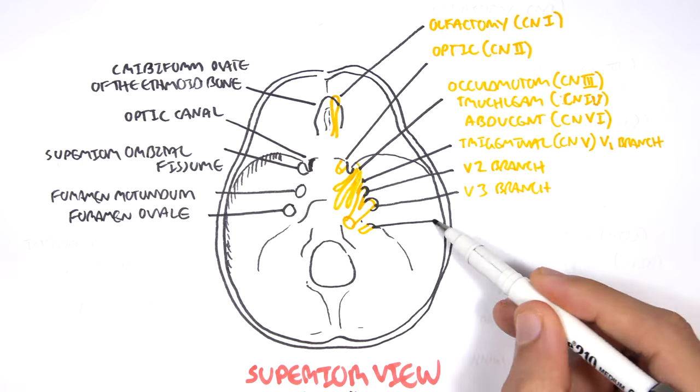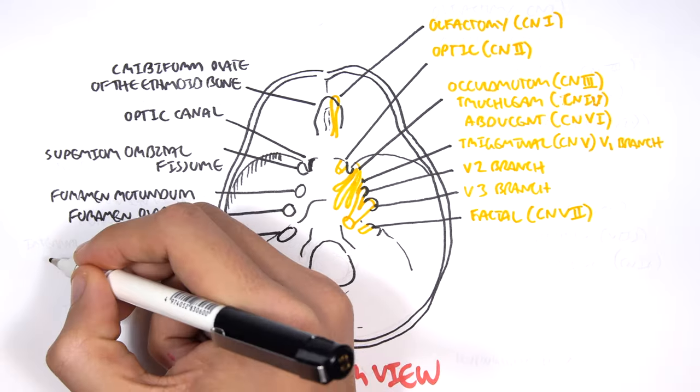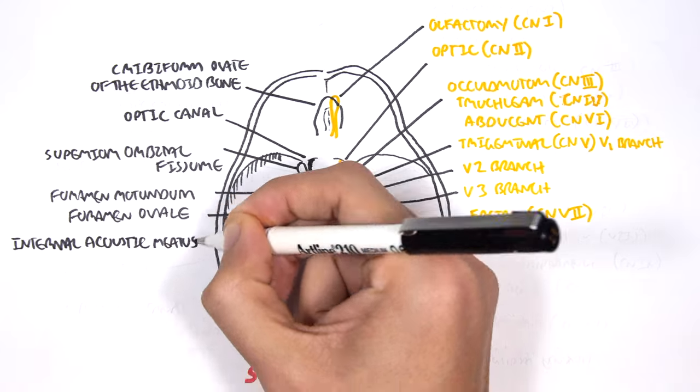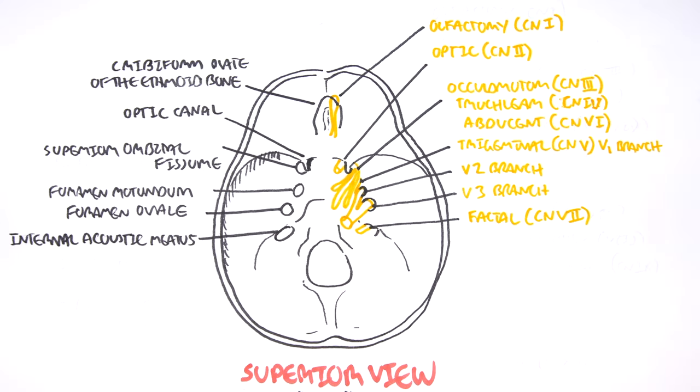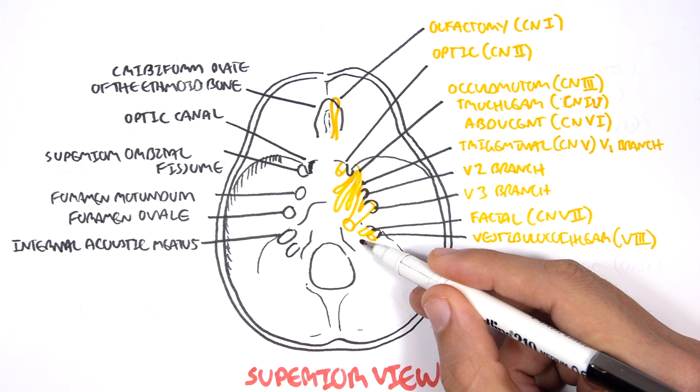Cranial nerve number seven is your facial nerve. Your facial nerve exits through the internal acoustic meatus. But there's also another nerve that exits through here, which is the cranial nerve number eight, your vestibulocochlear nerve. So the facial and vestibulocochlear nerve exits through the internal acoustic meatus.